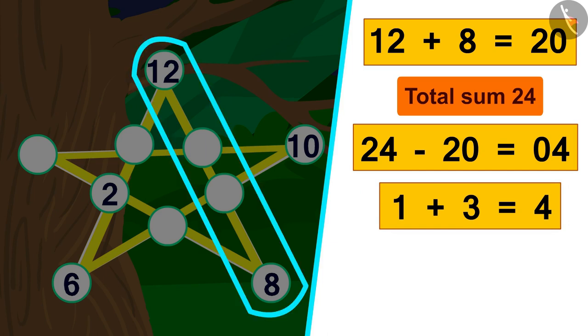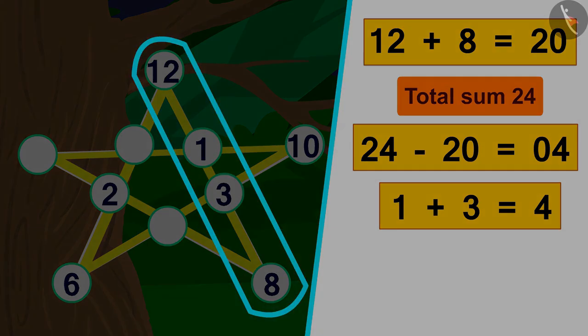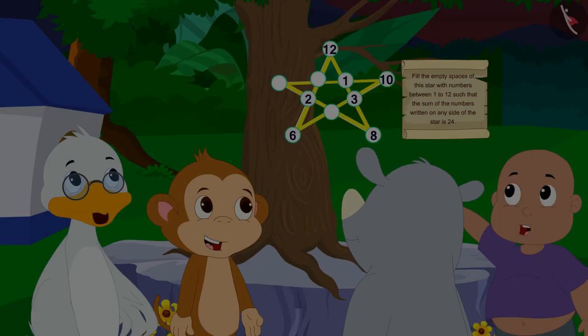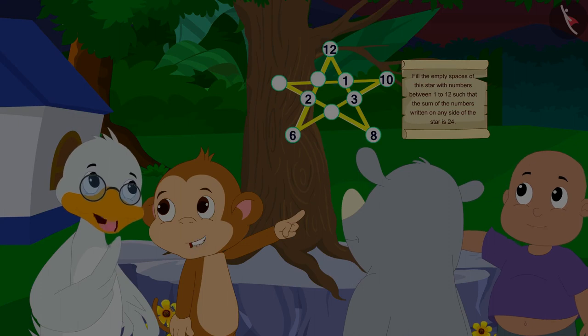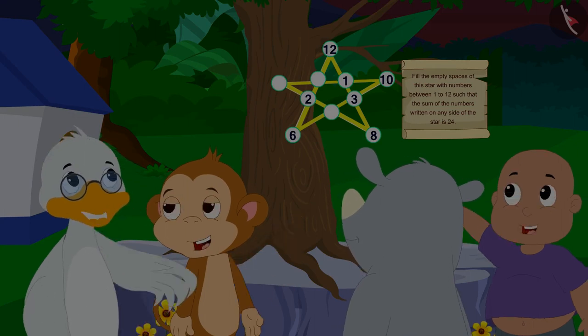On saying this, Babalu wrote the numbers 1 and 3 in the empty spaces of this edge. All the villagers got very excited. Now, everyone started trying to fill in the blanks written on the star.